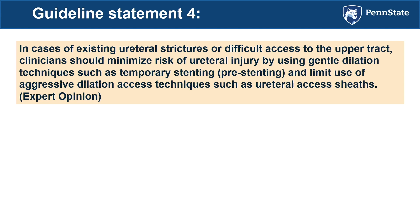Guideline statement number four: in cases of existing ureteral stricture or difficult access to the upper tract, clinicians should minimize risk of ureteral injury by using gentle dilation techniques such as stenting and limiting aggressive ureteral access sheaths. In this case where the tumor was obstructing and I couldn't get the ureteroscope up, I placed a stent and got a urine cytology. Since her cytology looked high-grade and her platelet count was low, I had given her a platelet-stimulating agent beforehand but didn't want to risk bleeding.